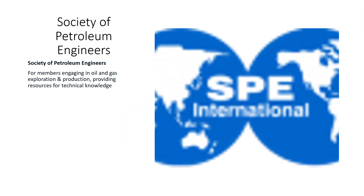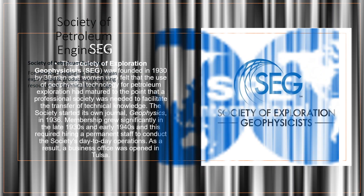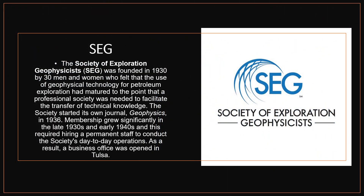The Society of Petroleum Engineers serves members engaged in oil and gas exploration and production, providing resources for technical knowledge. The Society of Exploration Geophysicists was founded in 1930 by 30 men and women who felt that the use of geophysical technology for petroleum exploration had matured to the point that a professional society was needed to facilitate the transfer of technical knowledge. The society started its own journal, Geophysics, in 1936. Membership grew significantly in the late 1930s and early 1940s, requiring a permanent staff, and as a result the business office was opened in Tulsa.